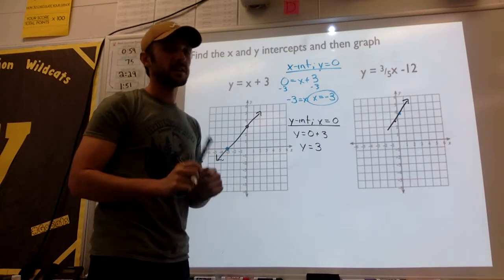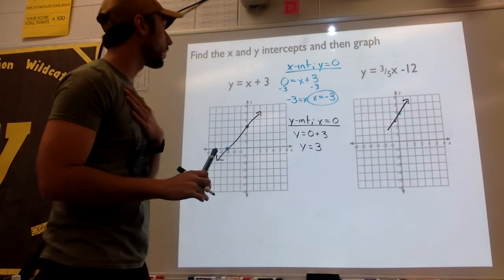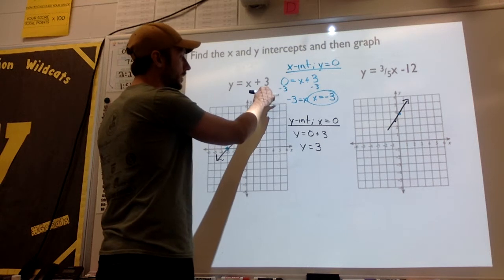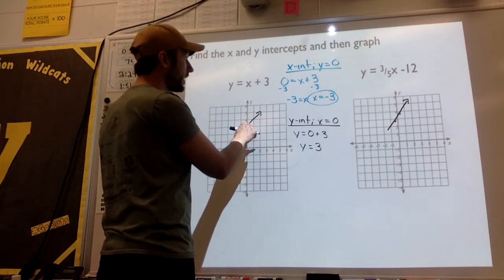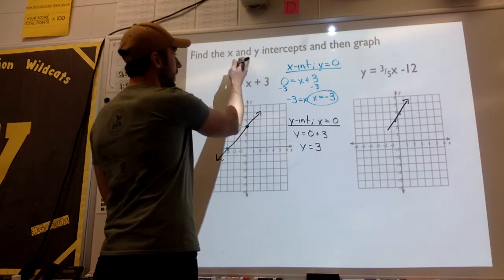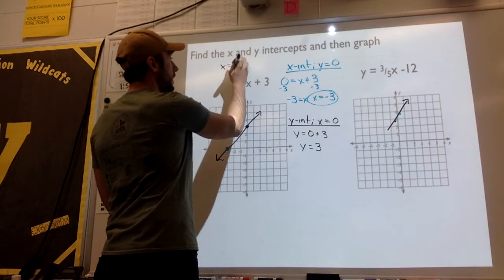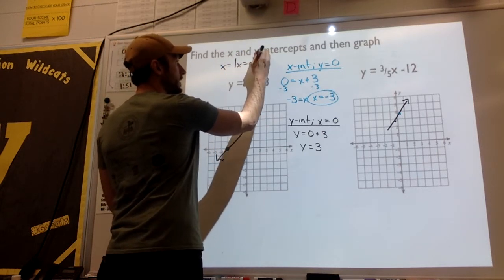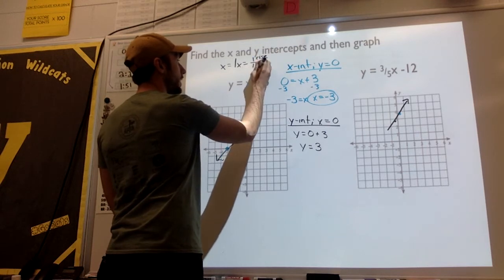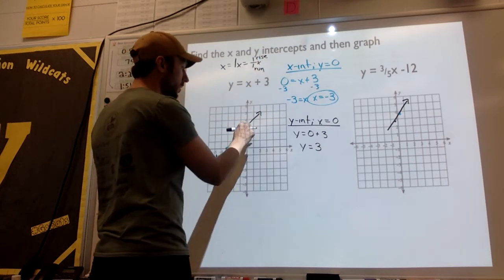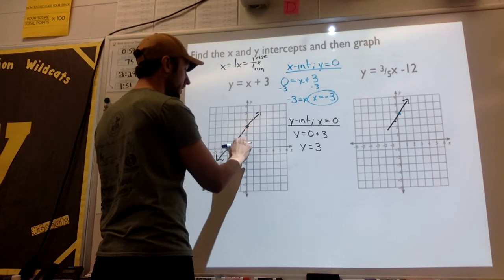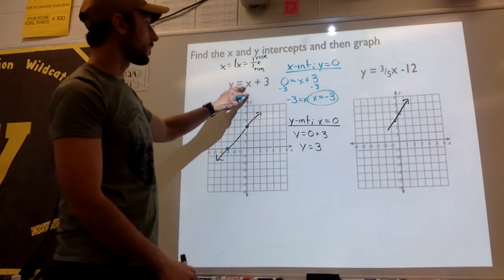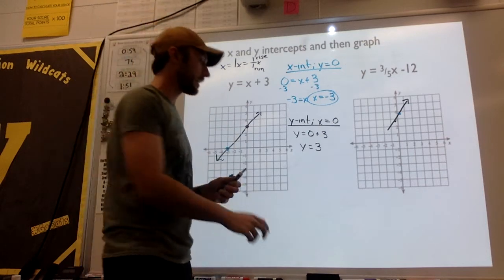We talked very little about slope-intercept form before we left. My y-intercept should be graphed at positive 3 — and hey, it is. My slope is x, and x equals 1x, which equals 1 over 1, which means I'm going to rise up 1 and run over 1. It works perfectly. Once we learn slope-intercept form, we can double-check ourselves as we go.